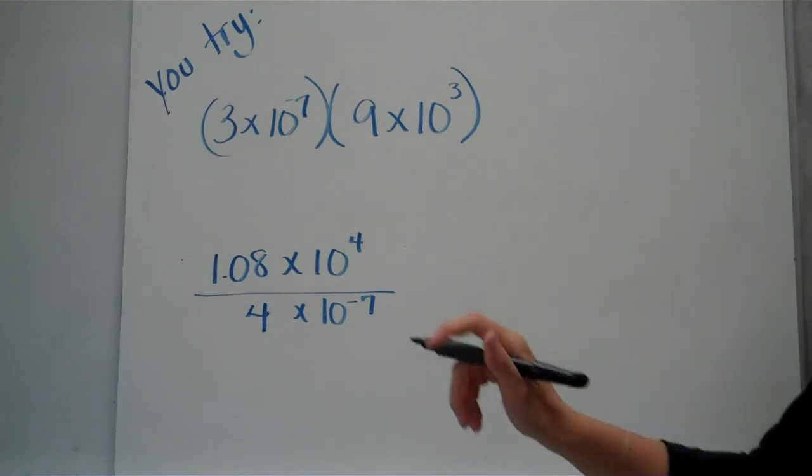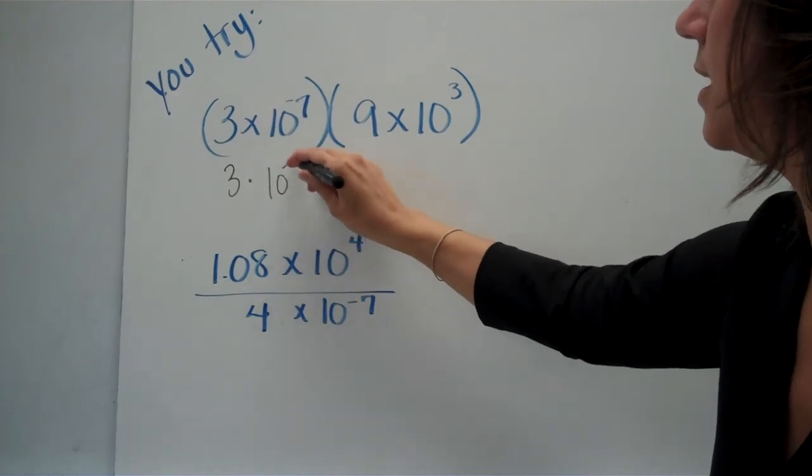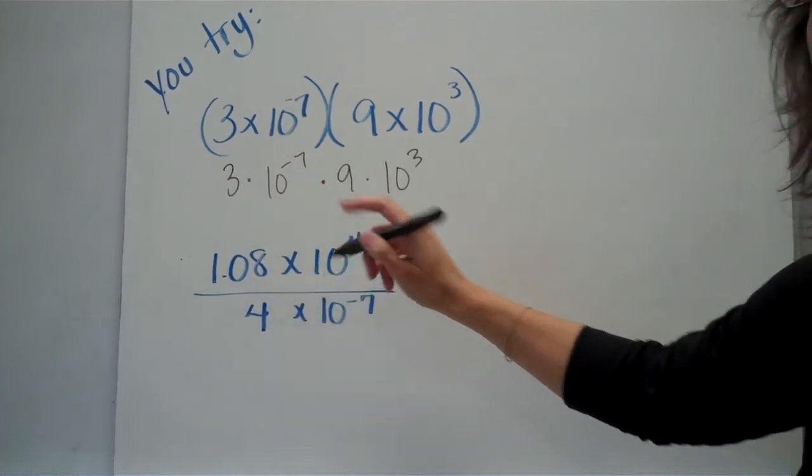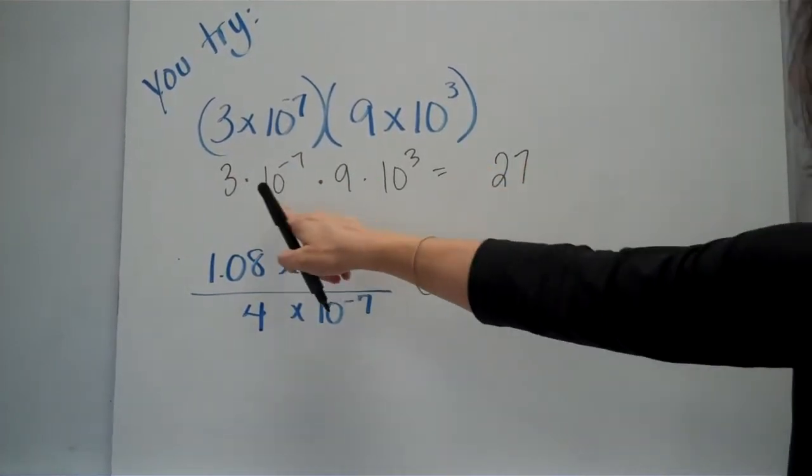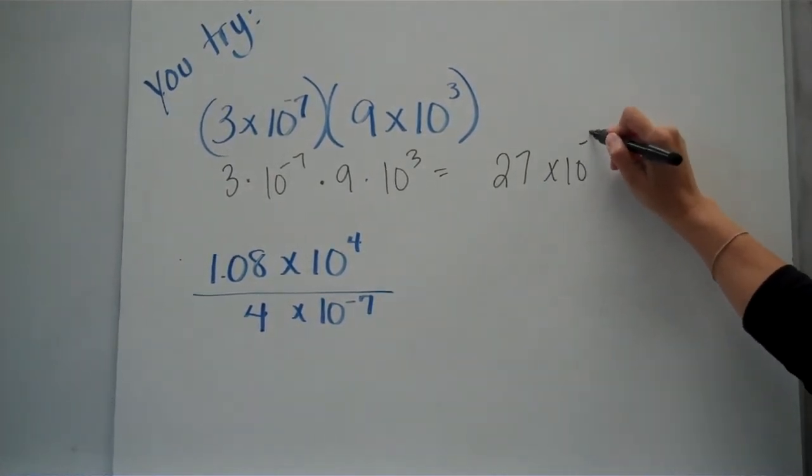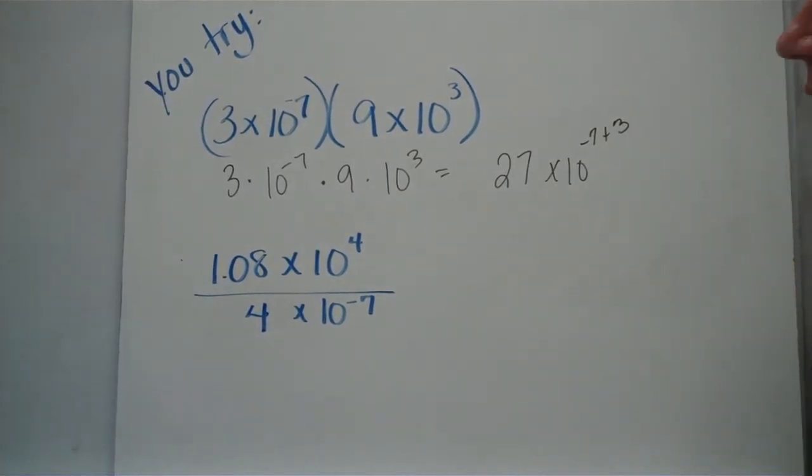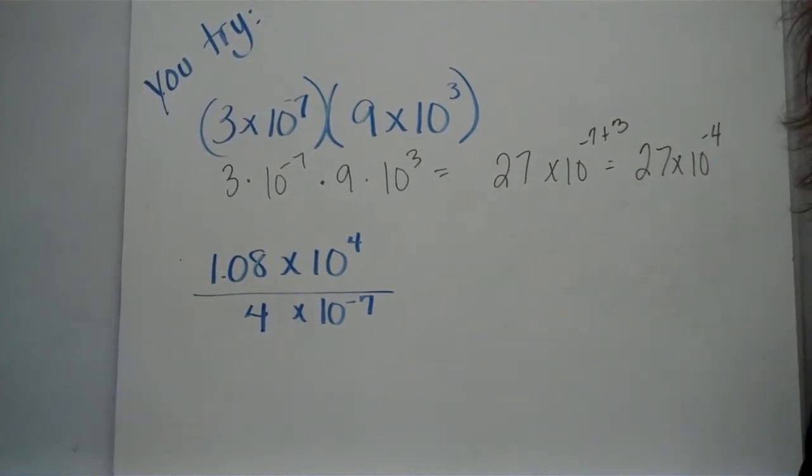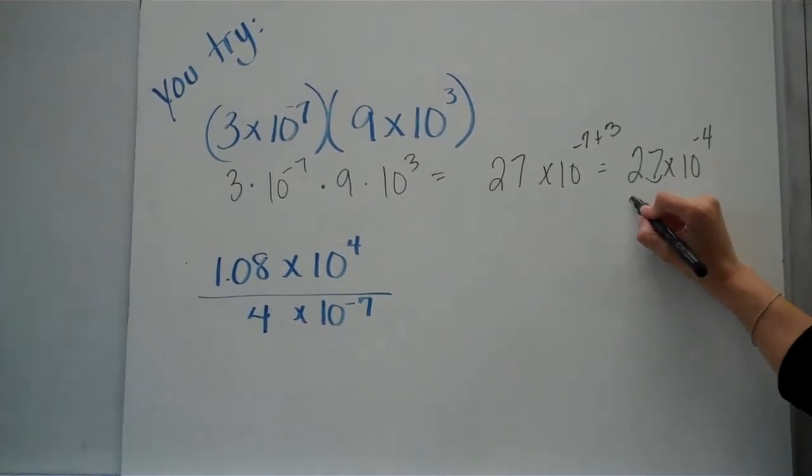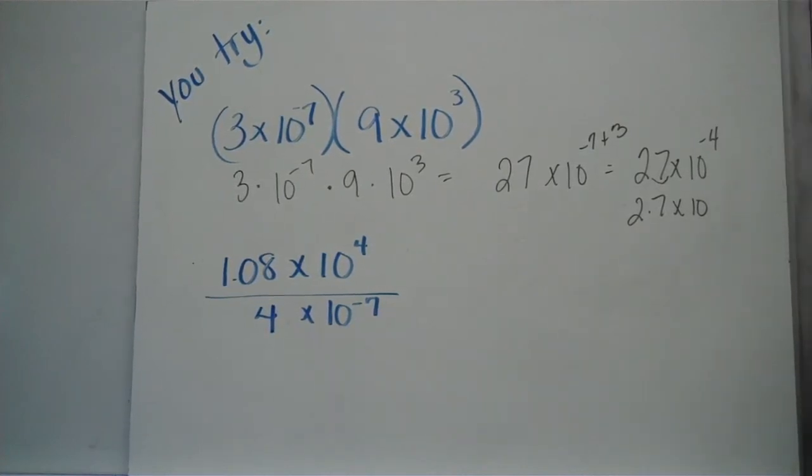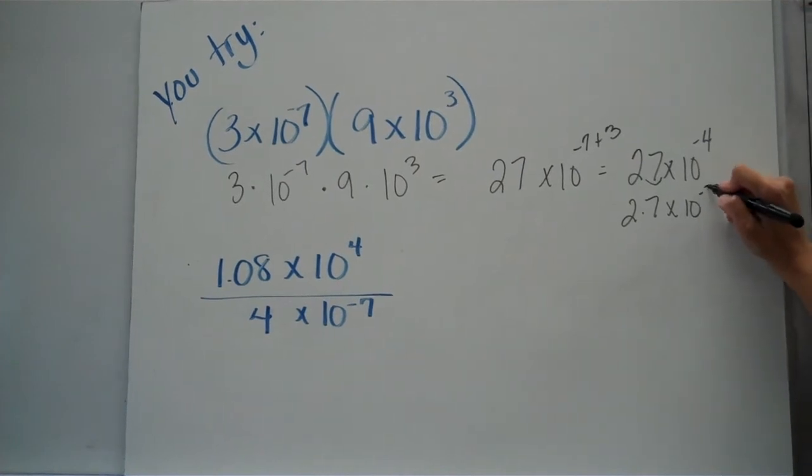All right. Remember, break it down into parts. We've got a 3, a 10 to the negative 7, a 9, a 10 to the third. Go ahead and put the factors together. 3 times 9 is 27. And now as far as the powers of 10, remember you want to add them. So what is negative 7 plus 3? It's negative 4. Don't forget that important step. Make sure it's in proper scientific notation. We're going to slide this decimal over. Do you remember what that does to the decimal? We want to add 1. Well, what's negative 4 plus 1? Negative 3. Negative 3.